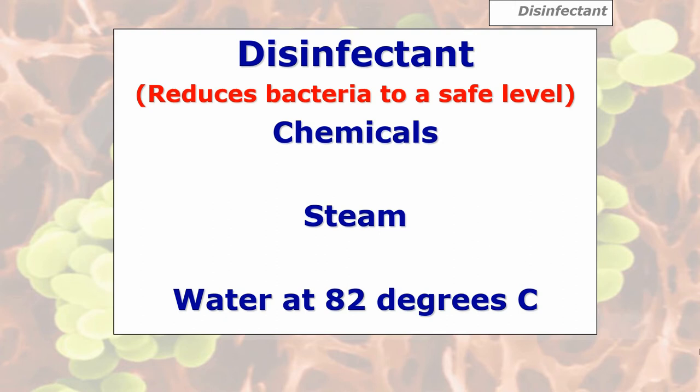I prefer not to use chemicals. You can use steam, which is water above 100 degrees C, or water at 82 degrees C — that is classed as a disinfectant. Think on that: that's the ideal disinfectant to use because it's not chemical based, it's not going to taint, it's going to reduce bacteria to a safe level, and it's going to act as its own sort of flushing liquid.